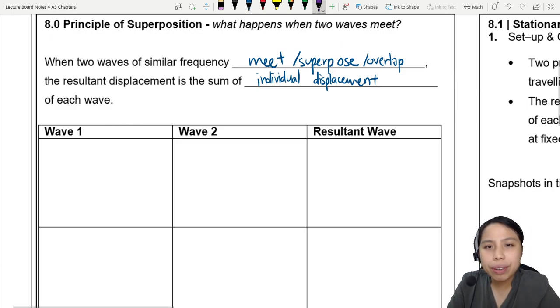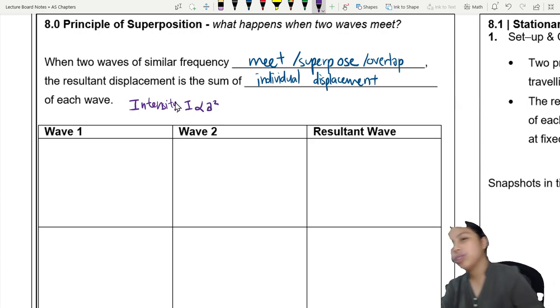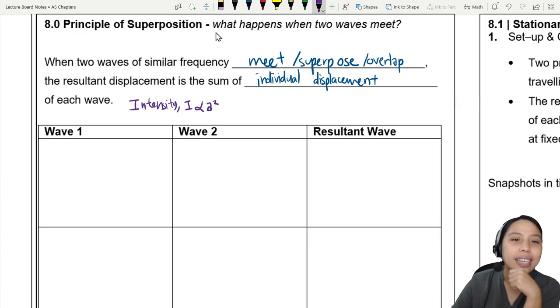But first, let me give a reminder. From the previous chapter, we looked at what is intensity. Intensity I is proportional to amplitude squared. Just a reminder because we will need to use that.